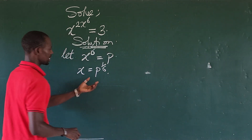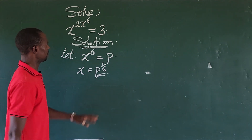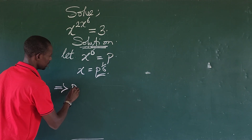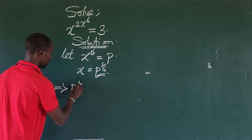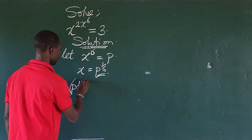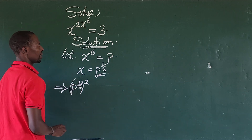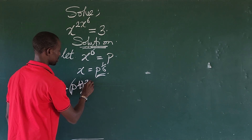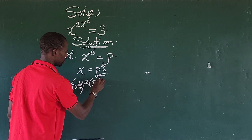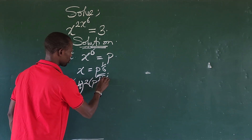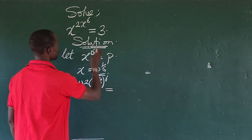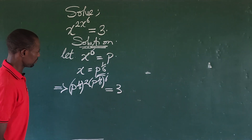Now let's replace x with this value in the original equation. Wherever we see x, we put in this value. This gives us: p to the power of one over six, in brackets, all raised to the power of two, times p to the power of one over six, in brackets, all raised to the power of six, equals three.